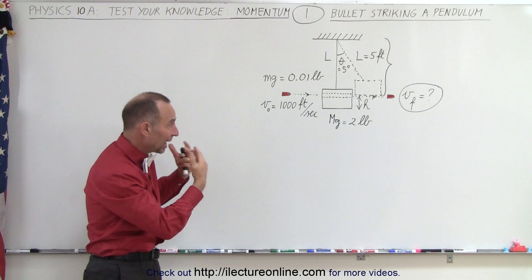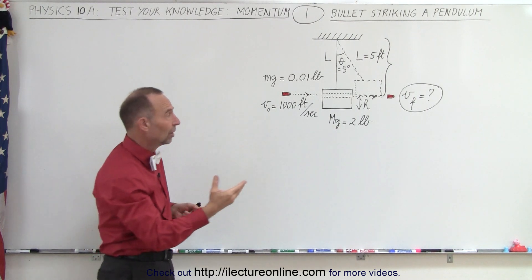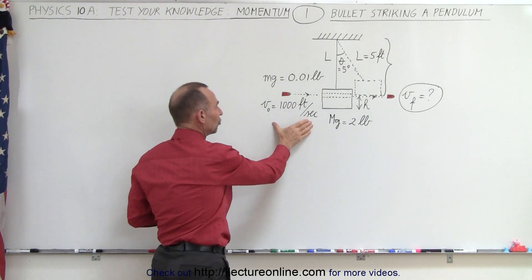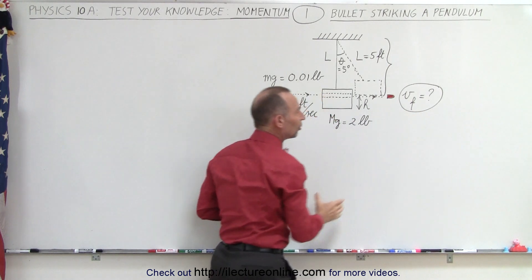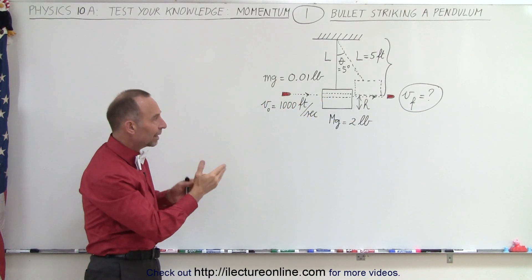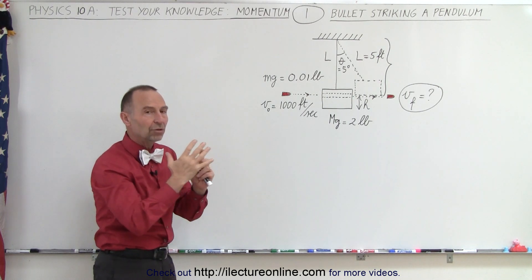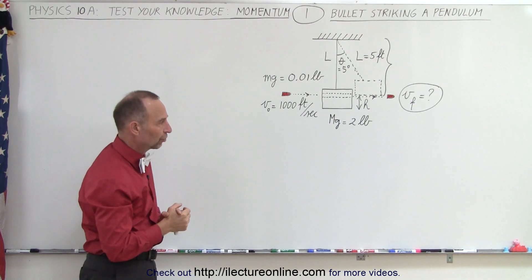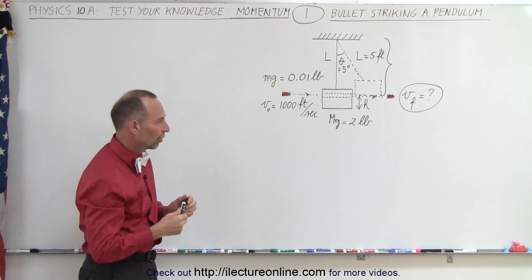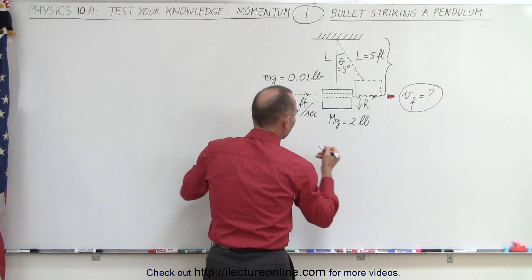Some energy will be lost, so we can't calculate it by the energy before and the energy after. What we need to do is first calculate the velocity of the block after the bullet strikes it and then use the conservation of energy afterwards. Let's start with the conservation of momentum.